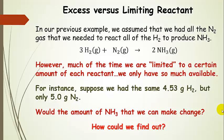Now let's tweak this a little. In the previous example, we assumed we had all the nitrogen gas needed to react all of the hydrogen to produce ammonia. But a lot of the time, we're limited to a certain amount of each reactant — we only have so much available. So let's say we still have 4.53 grams of hydrogen, but only 5.0 grams of nitrogen. Would the amount of ammonia we can make change? How can we figure this out?